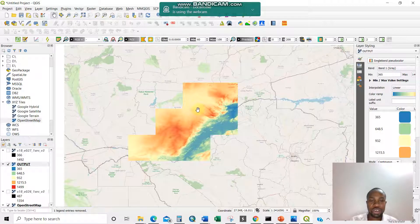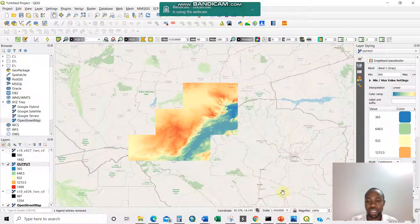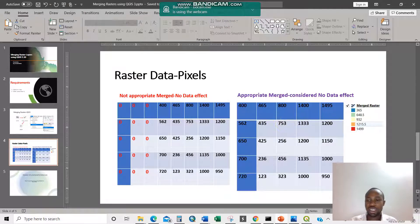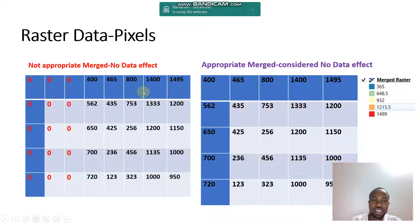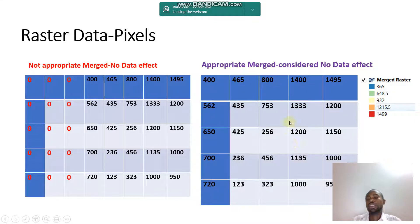So this is it — you have merged your raster layer, just like that, simple like that. We're done merging the raster layer. You can load different raster layers and practice. The PowerPoint shows how the inappropriate no-data handling looks, and the appropriate version will show elevation pixels correctly.